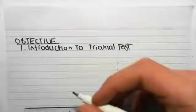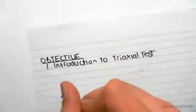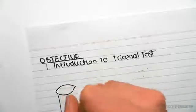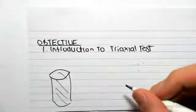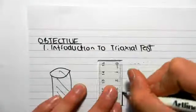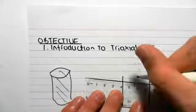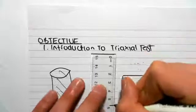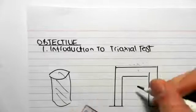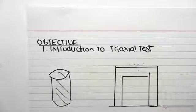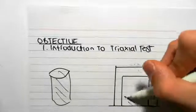So with our triaxial test, we have a cylinder of soil. If I were to draw this in section, this is our cylinder of soil. I'm going to draw our soil in black. So our soil is sitting in here.